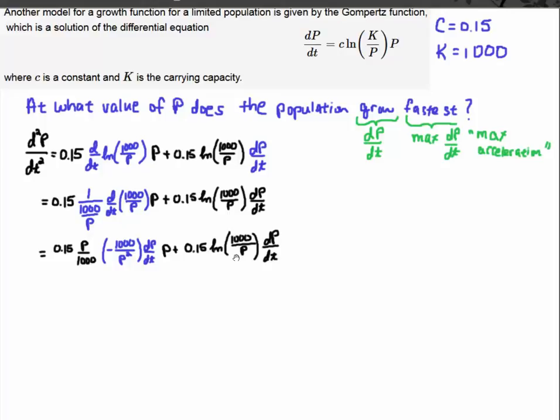Nothing changes on this term, so I just bring that down. Here, I took the reciprocal, 1 over 1,000 over p is just the reciprocal of that, so I get p over 1,000.